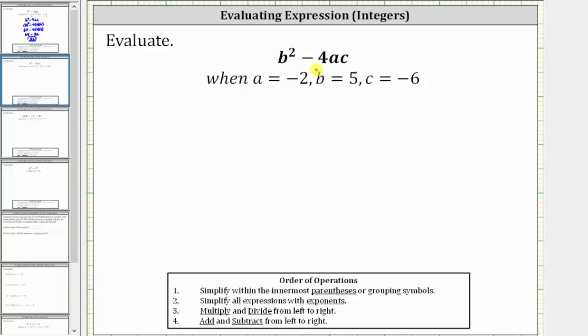We want to evaluate the expression b squared minus 4ac when a equals negative two, b equals five, and c equals negative six.